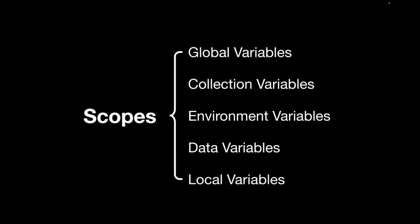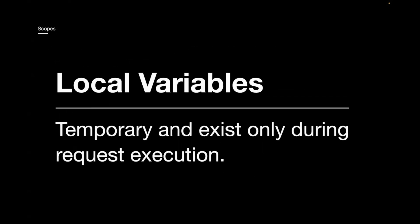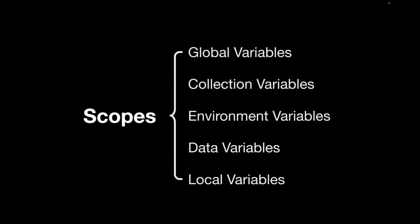The next one is local variable. Local variable is temporary and it exists only during the request execution. These are the different variable scopes in Postman. If you're working with Postman, it's very important to understand the different variable scopes, and this is also asked in interviews.